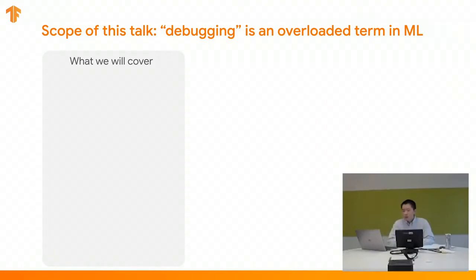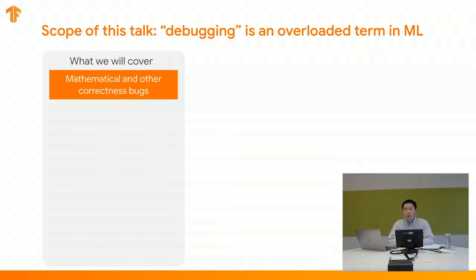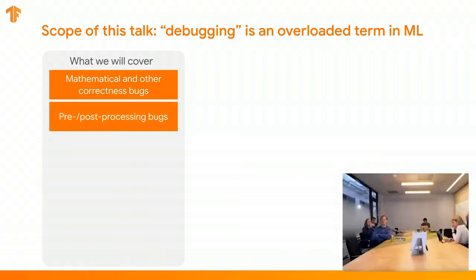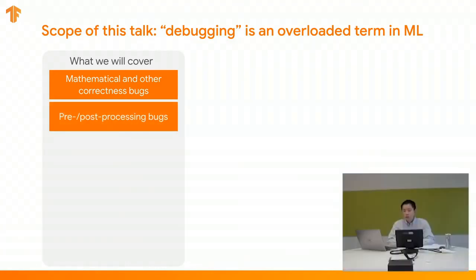First, I want to define the scope of debugging. The word debugging is an overloaded term in machine learning — different people use it to refer to different things, sometimes in confusing ways. In the scope of this talk, debugging refers to specific things that may have to do with the correctness of your TensorFlow program, like mathematical implementation bugs — for example, when you are implementing a new layer type or a new loss function, you may run into dtype issues, shape issues, or just straight bugs in the math. The techniques we'll cover will also be useful for debugging the pre-processing and post-processing parts of your TensorFlow program.